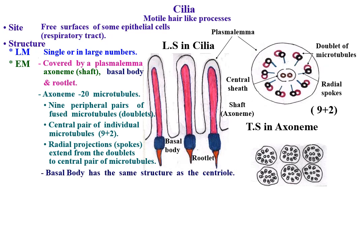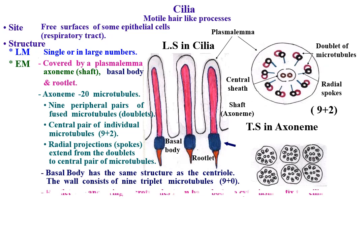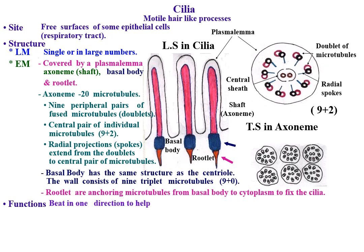The basal body has the same structure as the centriole — the wall of the basal body consists of nine triplet microtubules (9+0). Rootlets are anchoring microtubules extending from the basal body into the cytoplasm to fix the cilia. Functions: cilia beat in one direction to help the movement of particles or fluids from one place to another.